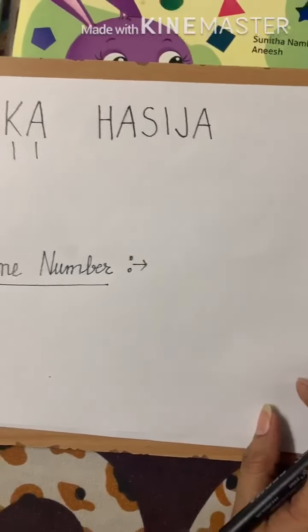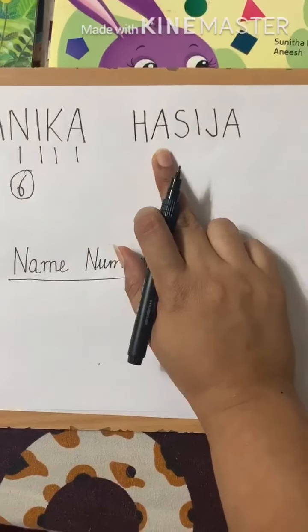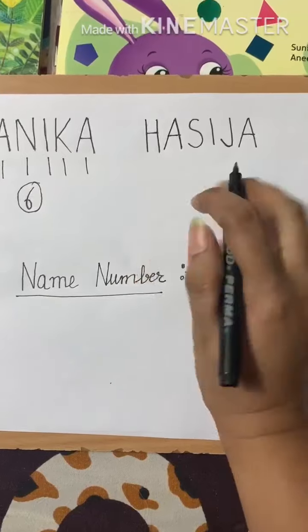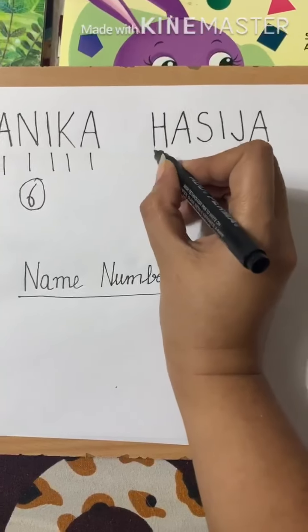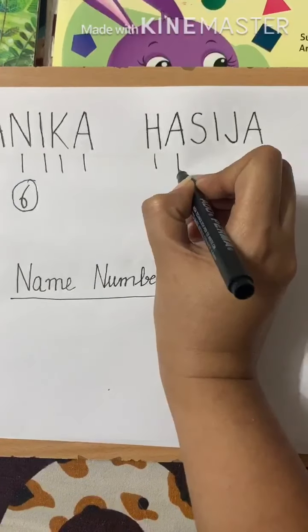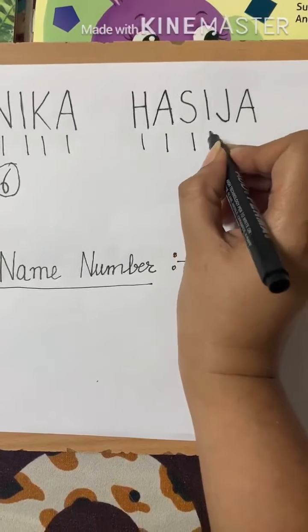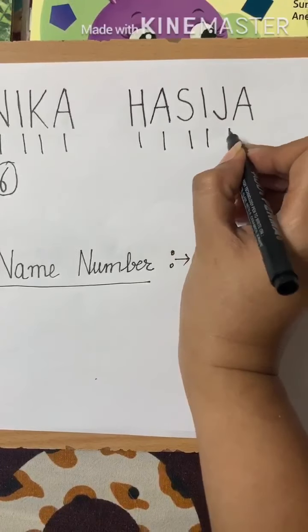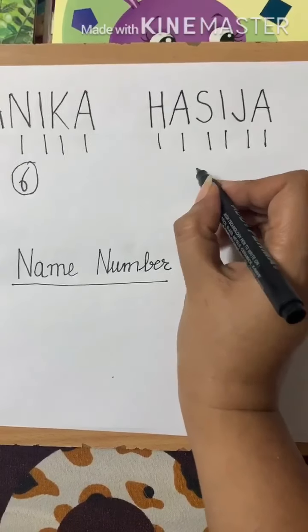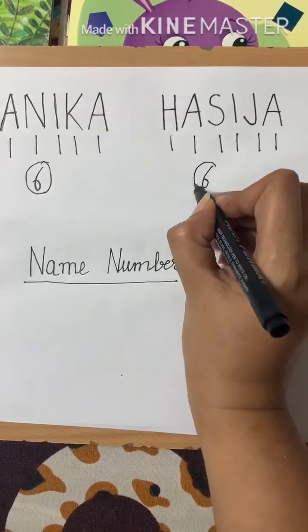Let's take my surname now — my second name, Hasija. Let's count: 1, 2, 3, 4, 5, 6. Again I have got 6.